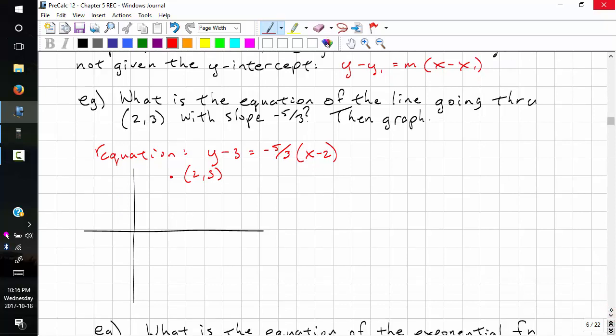This form is also easy to graph. What is the equation of the line going through 2,3 with a slope negative 5 over 3? And then graph it.